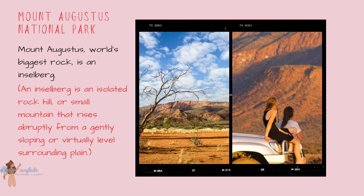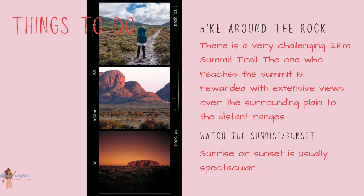Now let's talk about Mount Augustus National Park. Mount Augustus' world's biggest rock is an inselberg — an isolated rock hill, a small mountain that rises abruptly from a gently sloping or virtually level surrounding plain. Things to do at Mount Augustus Park: hike around the rock. There is a very challenging 12-kilometer summit trail, and those who reach the summit are rewarded with extensive views over the surrounding plain to the distant ranges. Or you can watch the sunrise or sunset, which is usually spectacular.